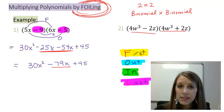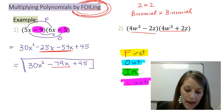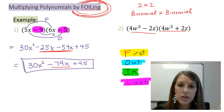So I have 30x squared minus 79x, because I've combined the middle two terms, plus 45. So I've FOILed this guy. I've combined my terms. I've confirmed my answer is in descending order. And therefore, I have my final answer to this example.